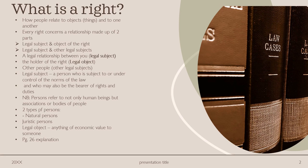It says how people relate to objects, which are things, and to one another. Every right concerns a relationship made up of two parts: legal subject and object of the right, and legal subject and other legal subjects. A legal relationship is between you, which is the legal subject and the holder of the right, which is the legal object. Any other people involved are known as other legal subjects. A legal subject is a person who is subject to, or under control of the norms of the law, who may also be the bearer of rights and duties. Note here, 'person' refers to not only human beings, but associations and bodies of people too.